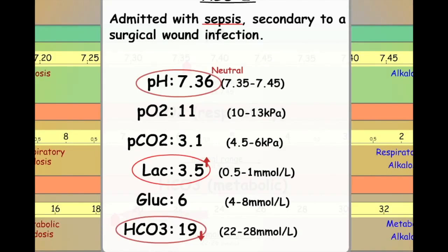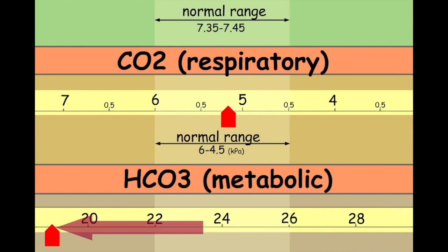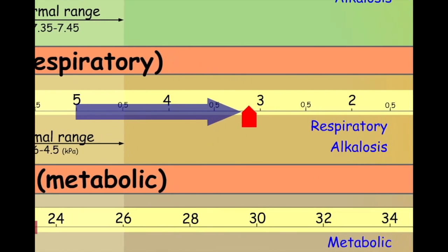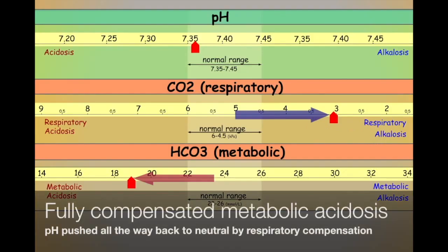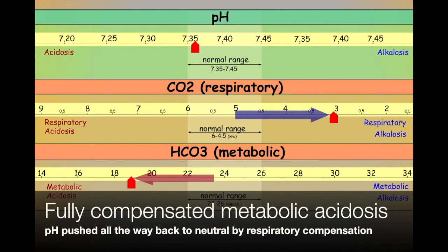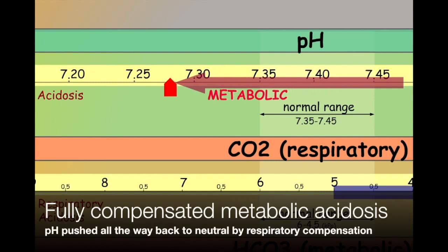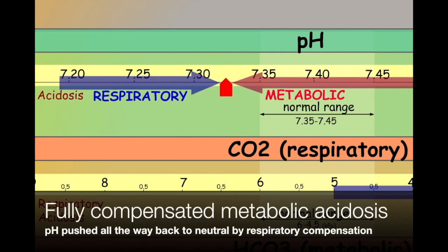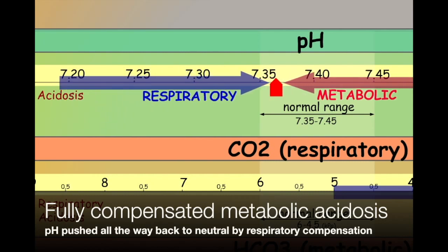The metabolic acidosis is of course being compensated for by the respiratory system. In response to the elevated lactate levels, the lungs have begun to hyperventilate, blowing off more CO2 and pushing the body into a respiratory alkalosis. We would describe this ABG as representing a fully compensated metabolic acidosis, because although metabolic factors are pushing blood pH in an acidotic direction, the respiratory compensation has pushed the pH all the way back to neutral.